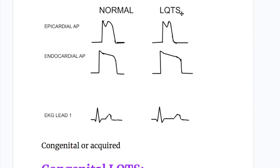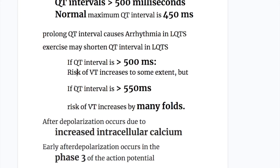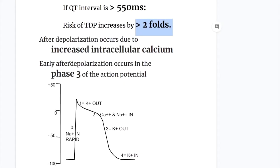What are the features of action potential and EKG normally and in LQTS Long QT syndrome? Here is the difference between the normal and the action potential of Long QT syndrome which is much longer compared to the normal. In the EKG lead one we can see the difference - QT interval is prolonged. A QT interval of more than 500 milliseconds is a long QT interval. If QT interval is more than 550 milliseconds, the risk of ventricular tachycardia increases by many folds.